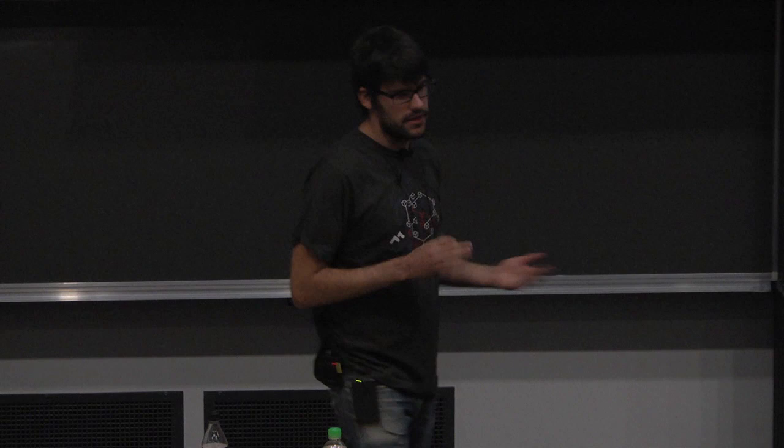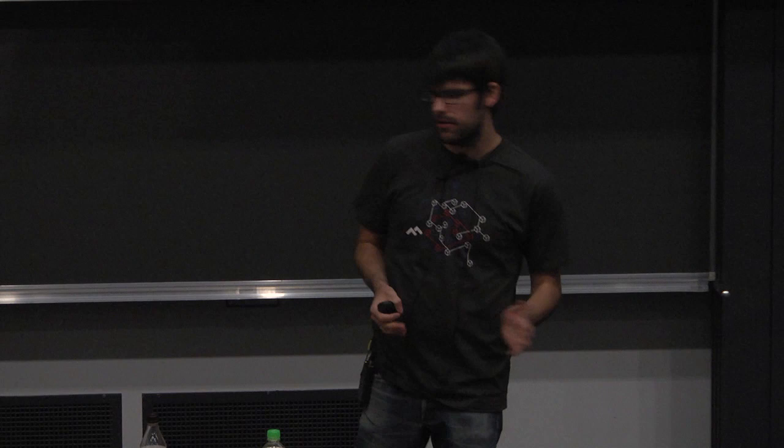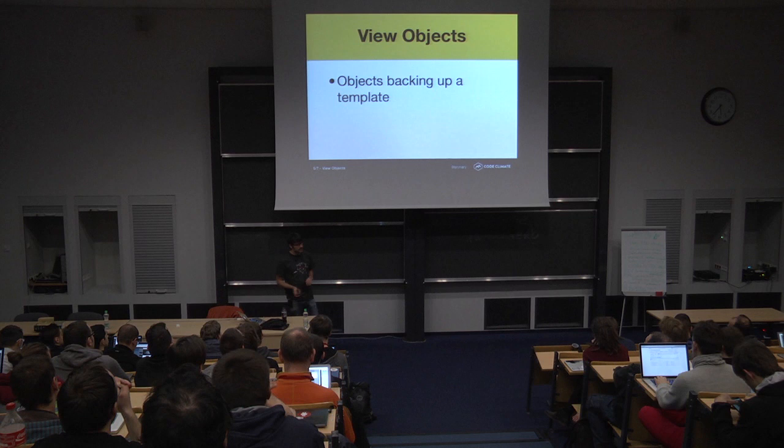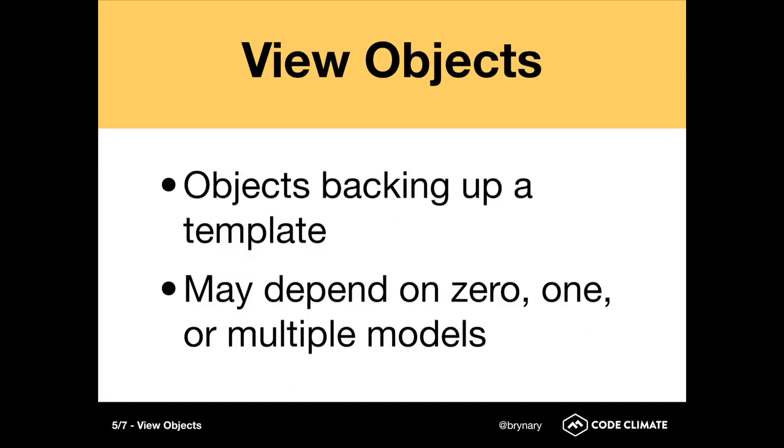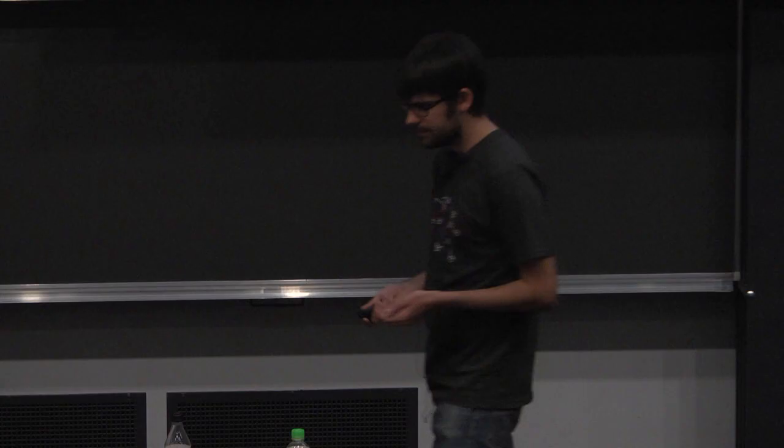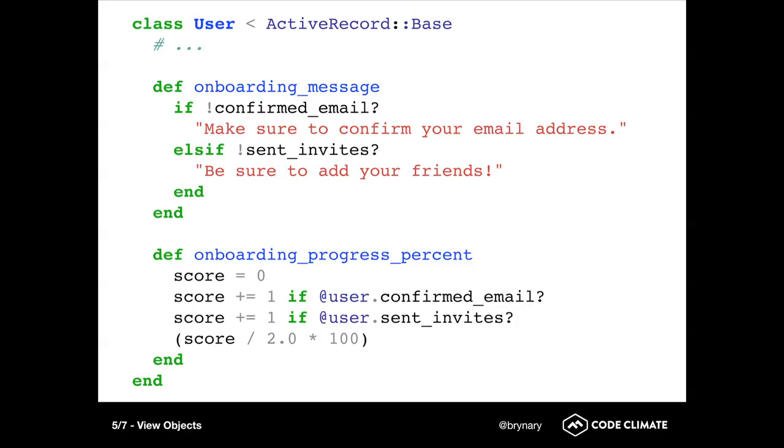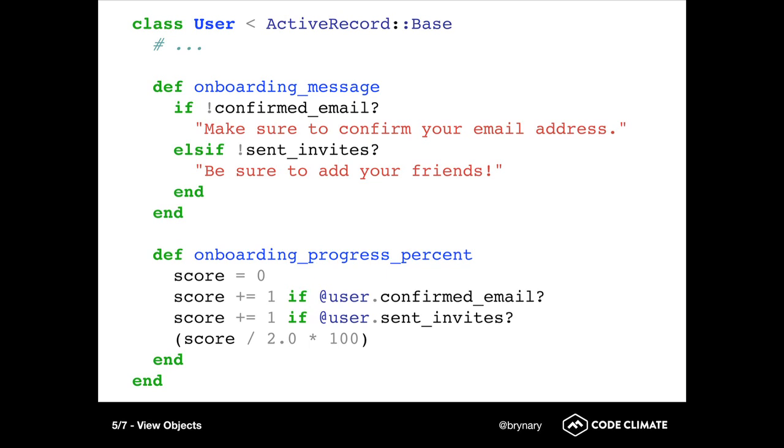The fifth pattern is view objects. So I use the term, people use lots of different terms and I think it's basically so confusing at this point that there's no winning, so I'm just going to use my term. View objects is the term that I use for objects that are backing up a template. And because of that, they could have a relationship with zero, one, or multiple models. So, think of like LinkedIn, LinkedIn has this little widget on the side that tries to tell you what you need to do next to complete your profile and it tells you how far along you are in that process.